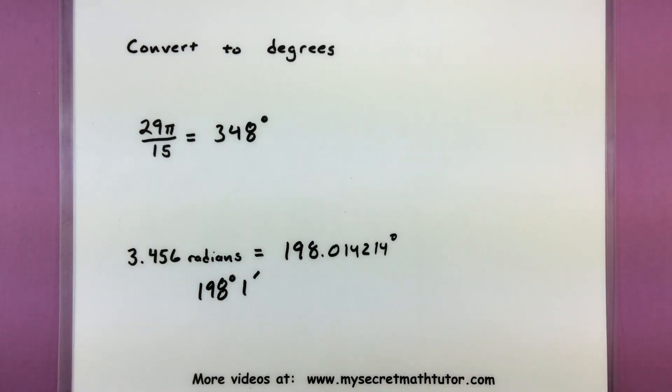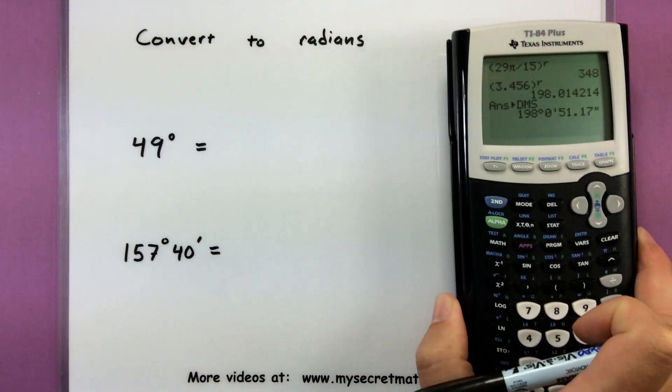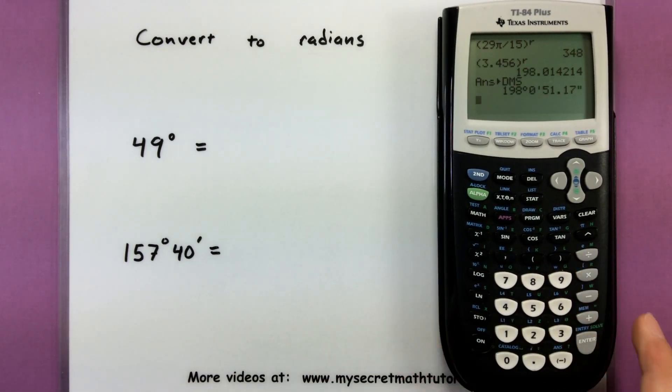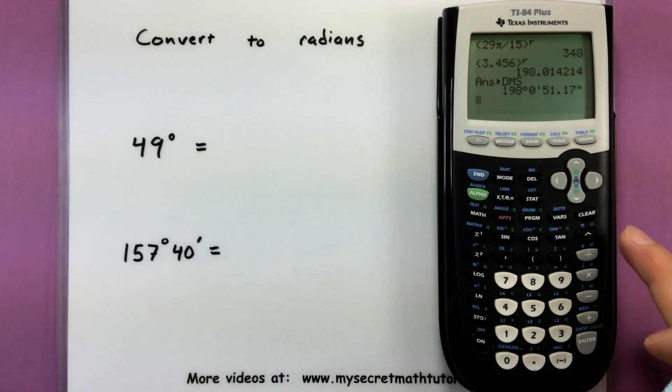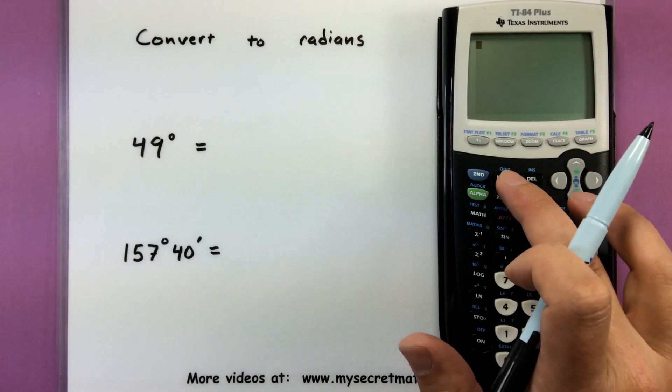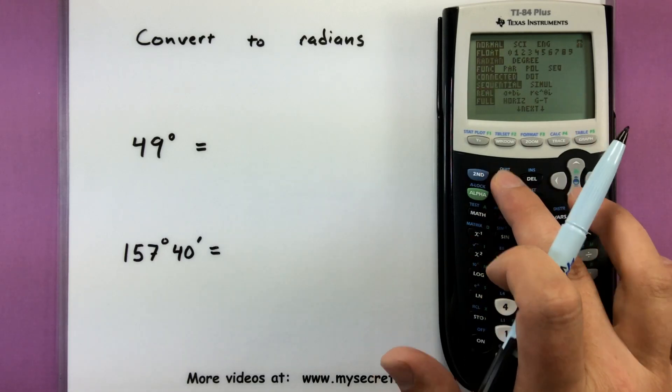Alright. Now if you can follow those steps, you can also go the other direction. Let's go ahead and do that for a few more examples. So like before, we need to make sure that our mode is set to whatever we're converting it into. In this case, we want it set to radians. Let's clear all of this out. Go into mode, radians. Alright. Second quit.